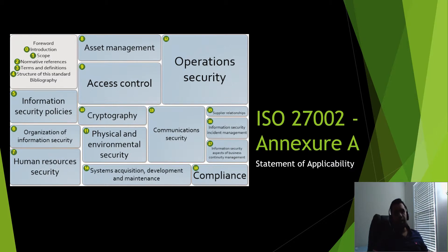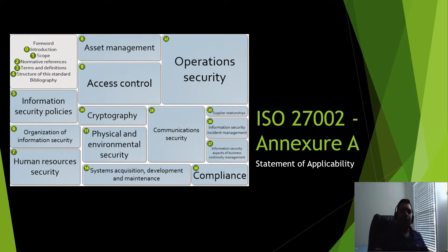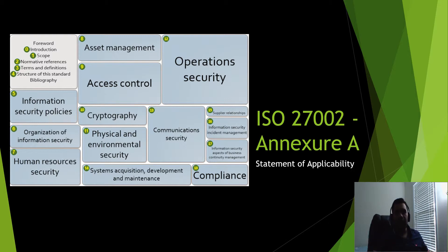Section 6 is organization of information security. Here you define roles and responsibilities and who is going to be informed if something goes wrong — like if an incident happens, how you manage security in projects, how you manage mobile security, and how you handle security for teleworking employees.